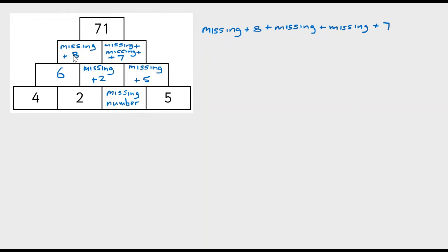So where has that come from? Missing number plus 8, plus my missing number, plus my missing number, plus 7. All I've done is added up everything in these two boxes to get this box, and I know that this box is 71, so this must make 71. This is the first stage of our solution, stage one.